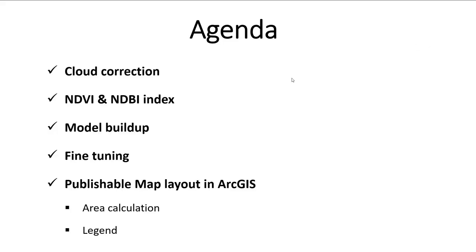Hello guys, welcome to this new video on land use classification using Landsat 8 imagery. Today's agenda: first we'll do cloud correction to remove cloud pixels, then use NDVI index to identify built-up areas, then build a random forest model and fine-tune the number of trees. Finally, we'll export the classified image, open it in ArcGIS, calculate area, draw a legend. This can also be done in Google Earth Engine, but doing it in ArcGIS is a lot easier.